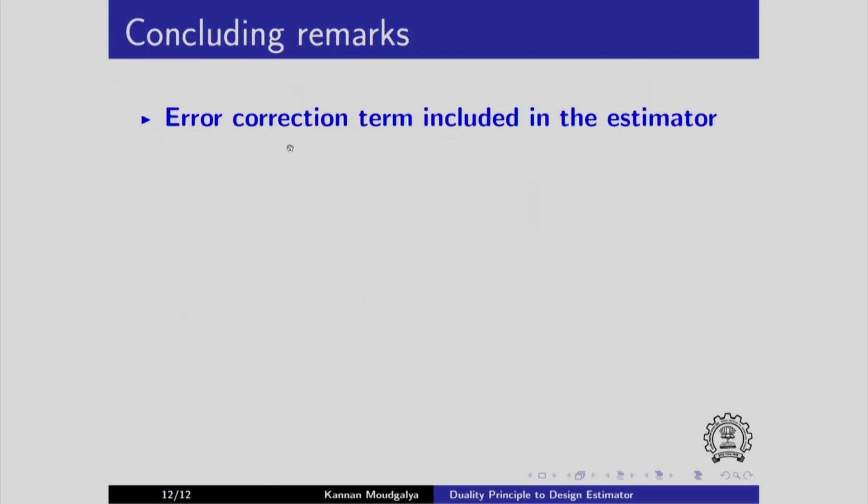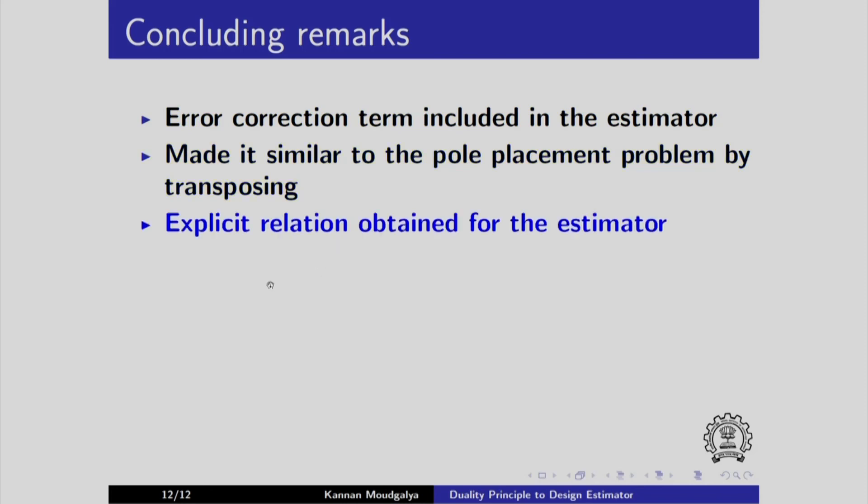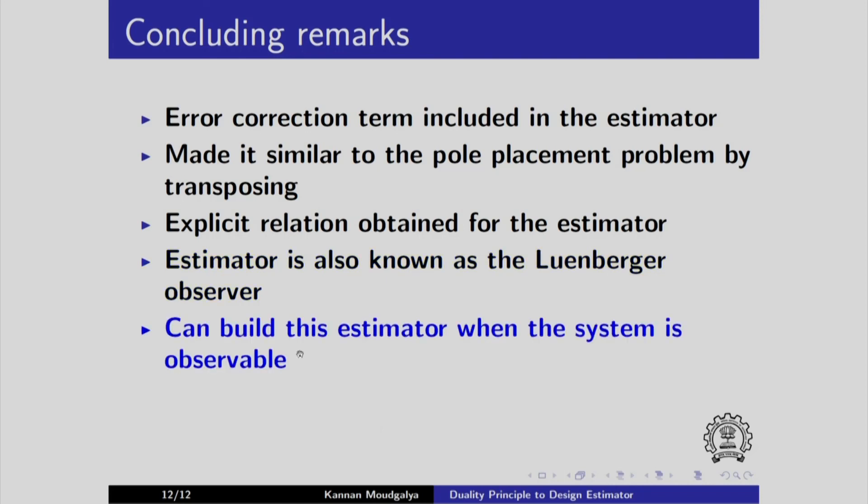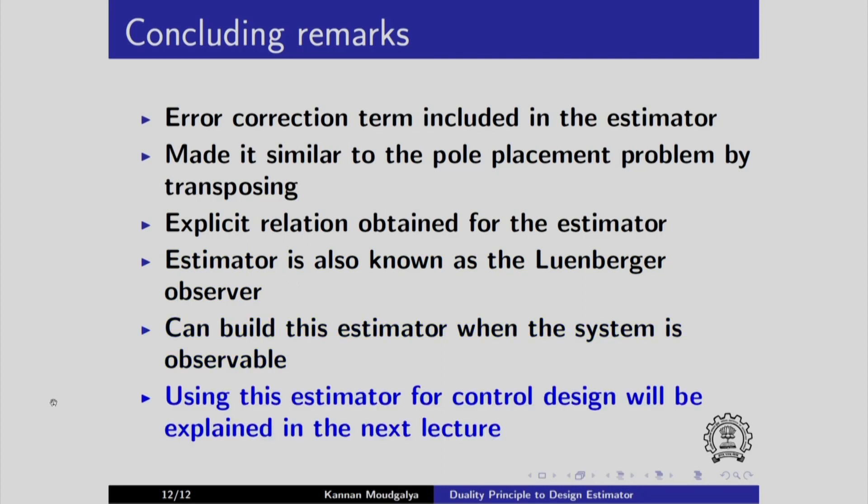To conclude, error correction term is included in the estimator. We made it similar to the pole placement problem by transposing. We obtained explicit relation for estimator. This estimator is also known as the Luenberger observer. We can build this estimator when the system is observable. Using this estimator for controller design will be explained in the next lecture. We have come to the end of this presentation. Thanks for joining. Goodbye.